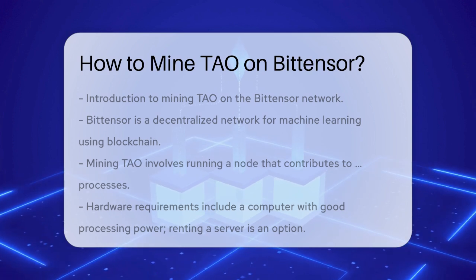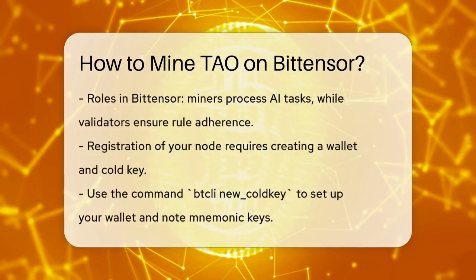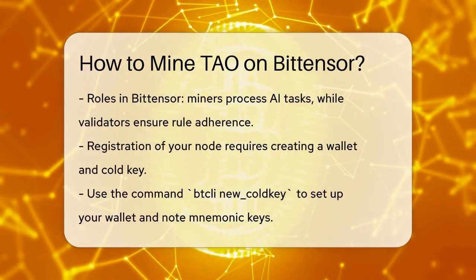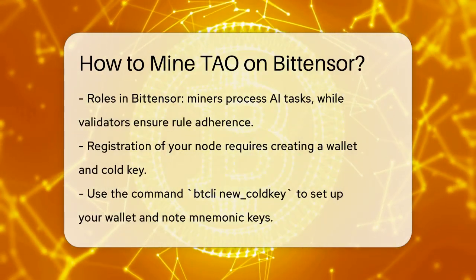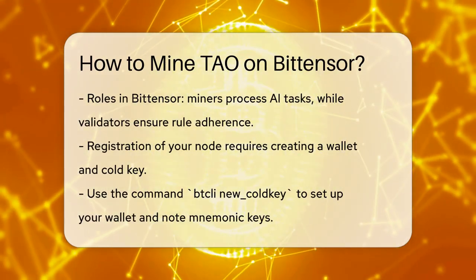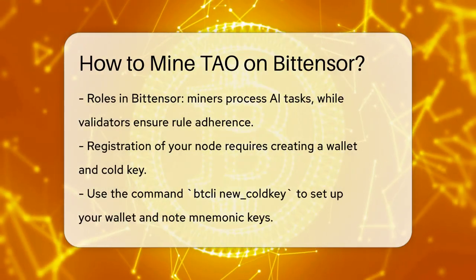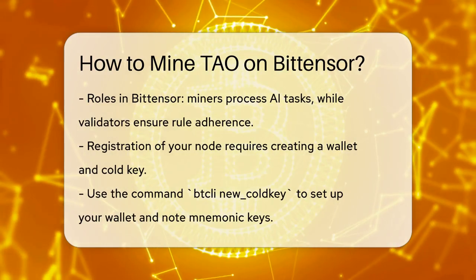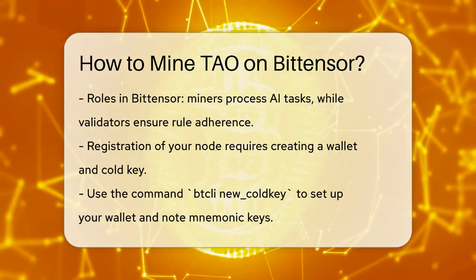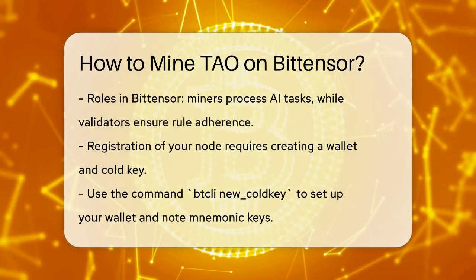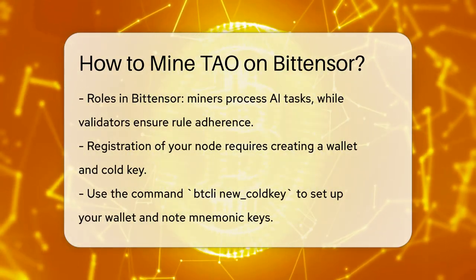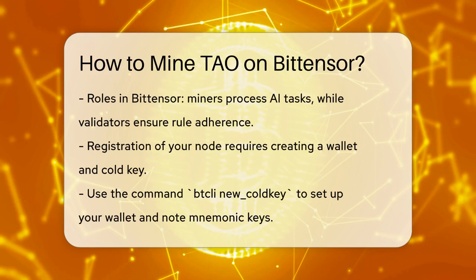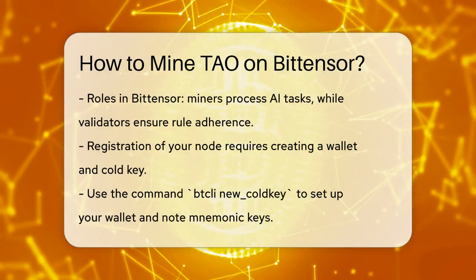Choosing your role. On the Bittensor network, you can either be a miner or a validator. Miners do the actual work of processing AI tasks, while validators ensure that the miners are following the consensus rules. Each role is crucial for the network's operation.